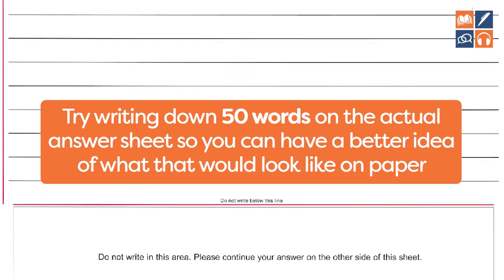Problem number one is asking 'why do I have to do this?' This has nothing to do with your linguistic ability, grammar, or vocabulary, but it is one of the main reasons why students fail to get the score they deserve with Task 1 academic. Thinking 'this is stupid, I don't like this' creates a barrier to actually learning it and doing very well.